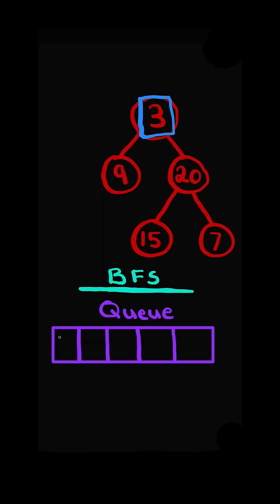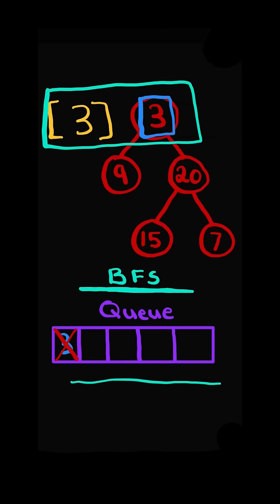We take the root node 3 and add it to our queue. Now we have one element in our queue. We then pop the element and add it to a sublist. Now the queue is empty, which means we went through the entire first level.